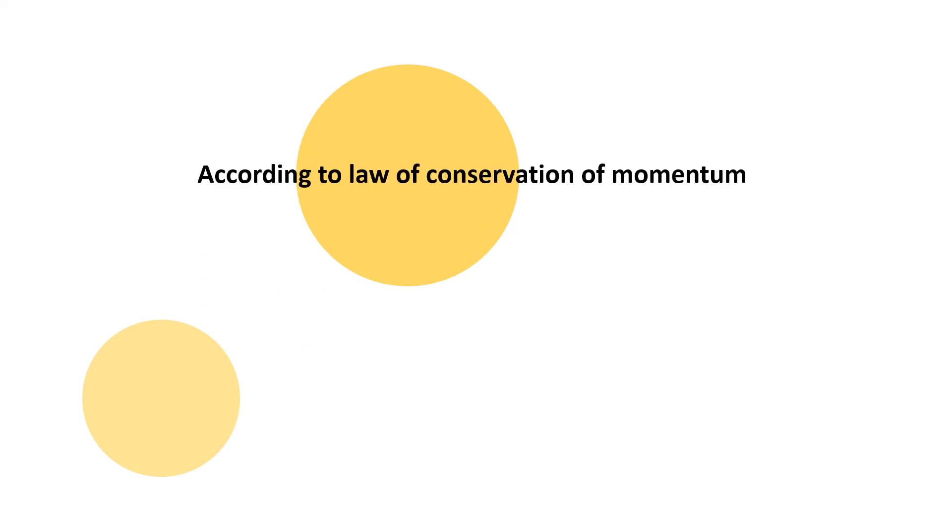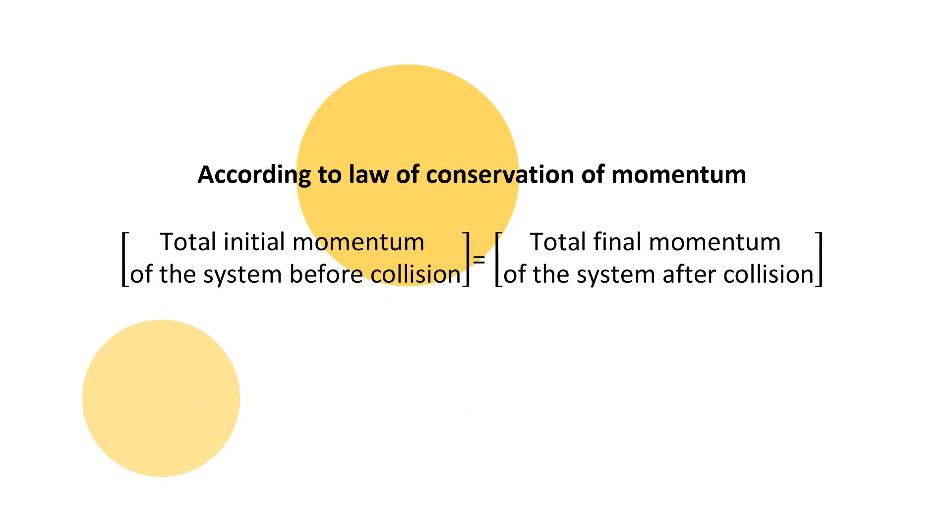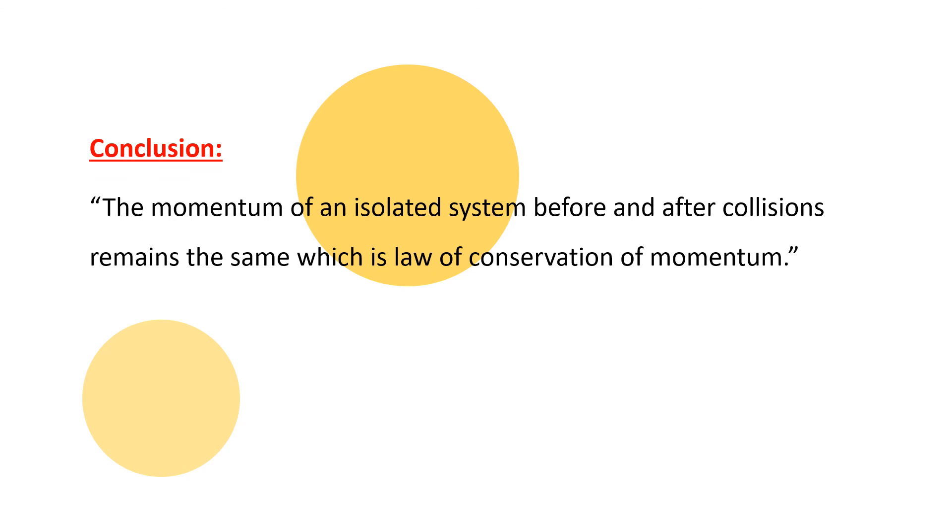According to law of conservation of momentum, we have learned that both bodies' momentum will be conserved. So total momentum of the system before collision is equal to total momentum of the system after collision. Before collision we have M1 U1 plus M2 U2. After collision, M1 V1 plus M2 V2. This remains the same. And this is the conclusion. The momentum of the system before and after the collision remains the same, which is the law of conservation of momentum.